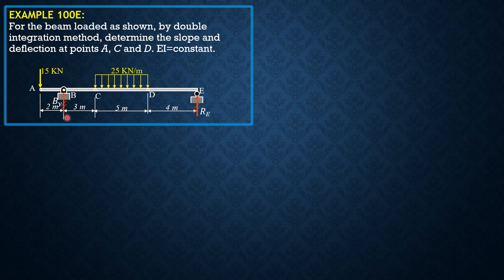So we have summation moment E equals zero. B_Y times 12 minus 15 times 14, and minus 25 times 5 times 6.5, where 2.5 plus 4 is 6.5. So B_Y equals 2045 over 24 kilonewtons.